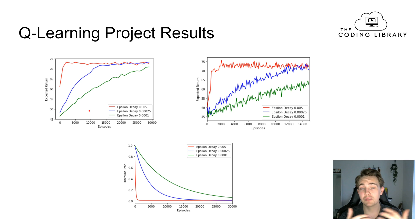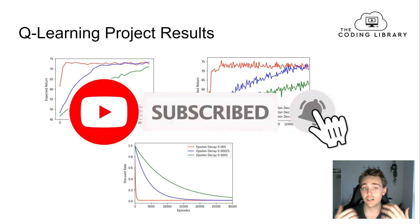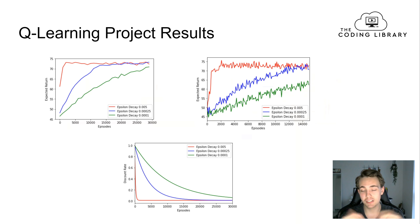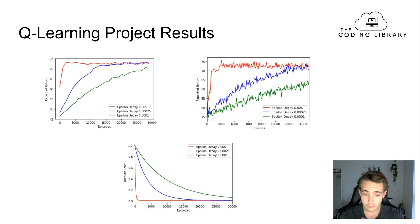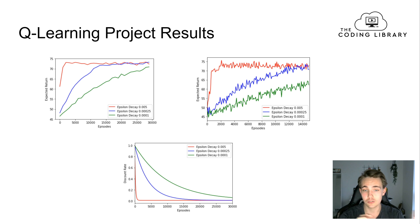If you want to see the implementation of this Q-learning project, make sure to hit the subscribe button and bell notification so you'll get notified when I upload the next one or two videos about implementing this in code — including the training, parameter tuning, and discussing how parameters affect each other. This is a really nice project to get started with in reinforcement learning, so make sure to follow along and try to implement it yourself.